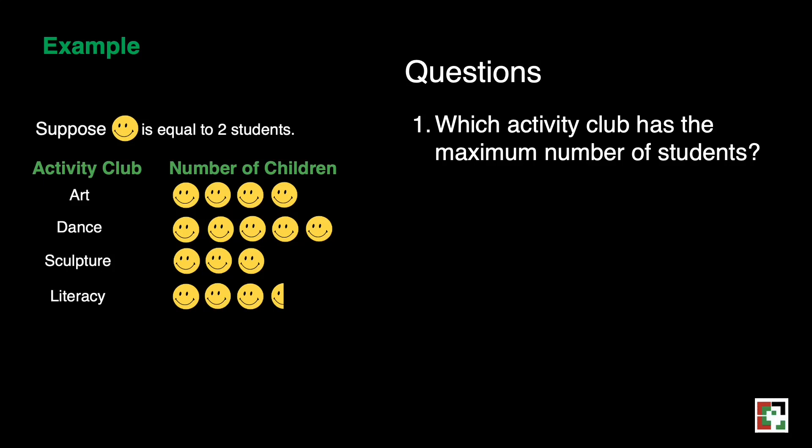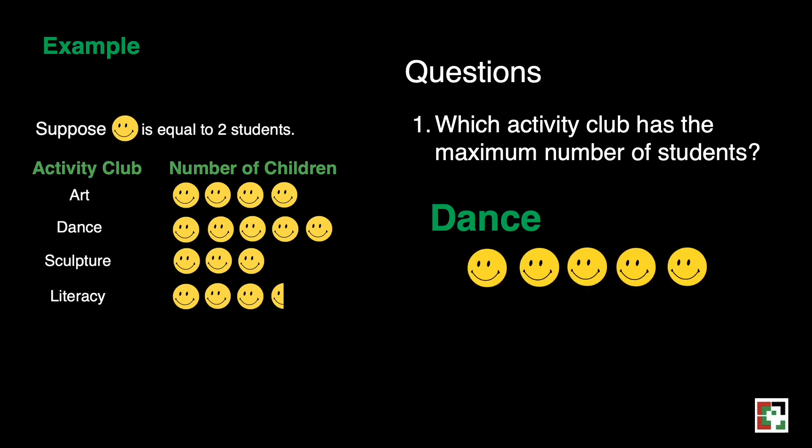For question one, which activity club has the maximum number of students? Based on the table, we can see that dance has the most number of smileys — there are five smileys. Five times two equals ten students. So our answer for the first question is dance.